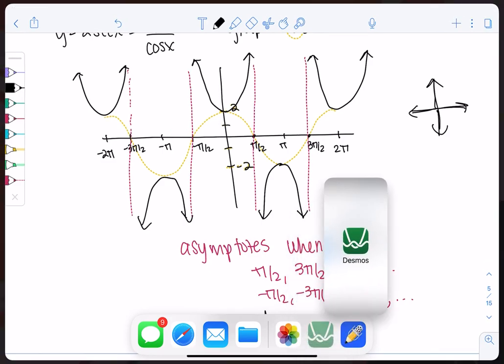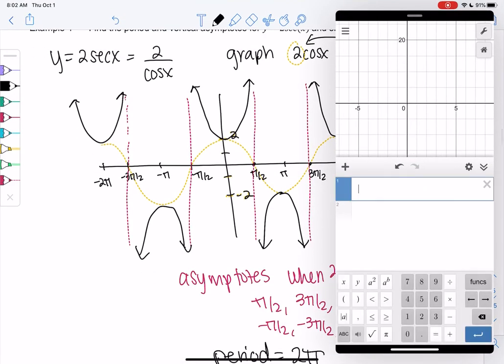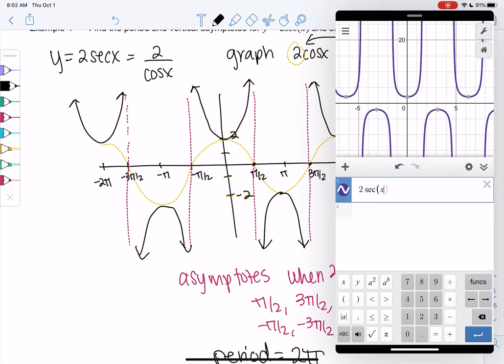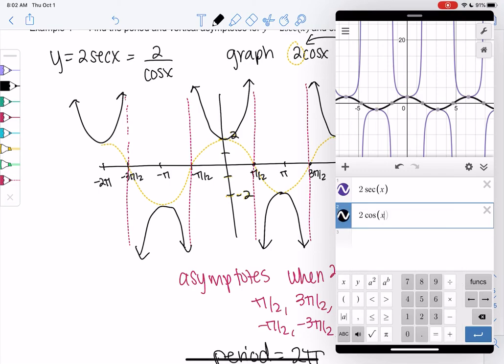Let's just check out these graphs on Desmos. I don't remember if Desmos does secant. Oh it does! So 2 secant of x, and then 2 cosine of x. You can see they're just reciprocals, like opposites of each other.